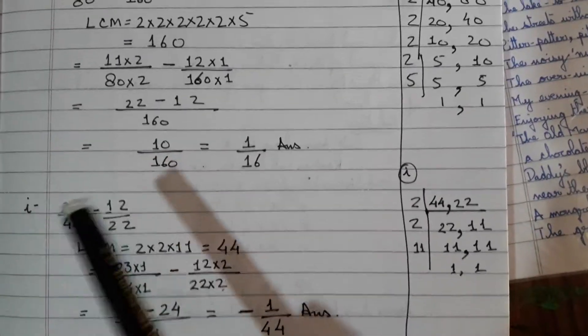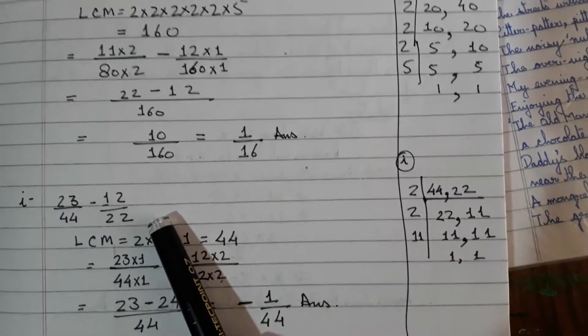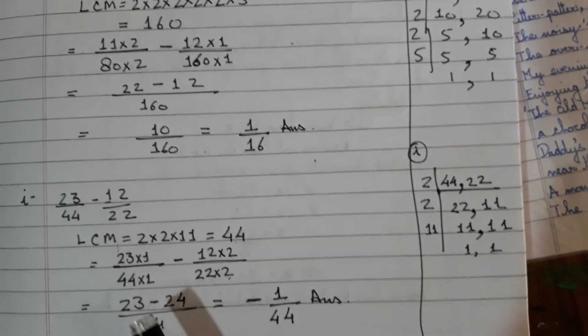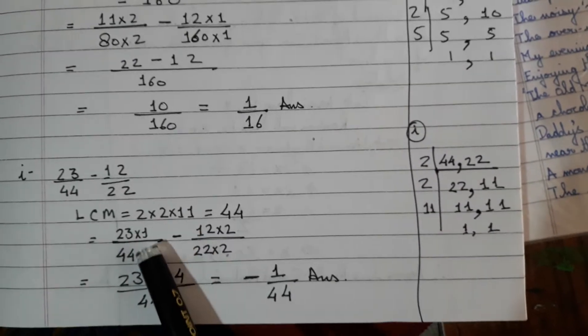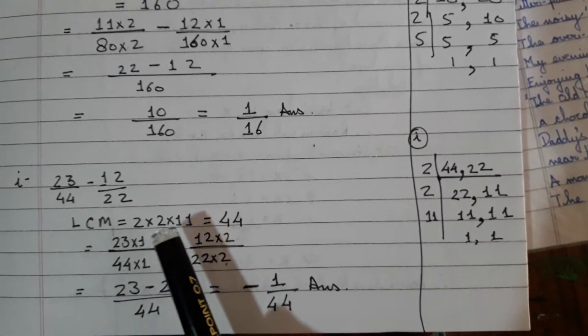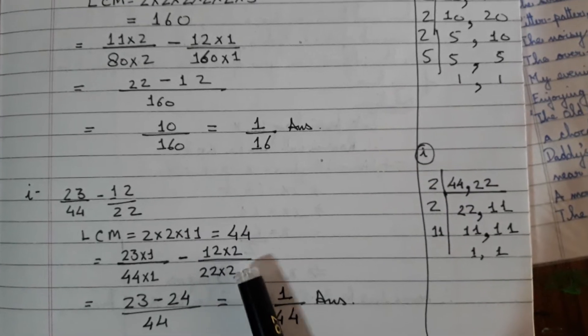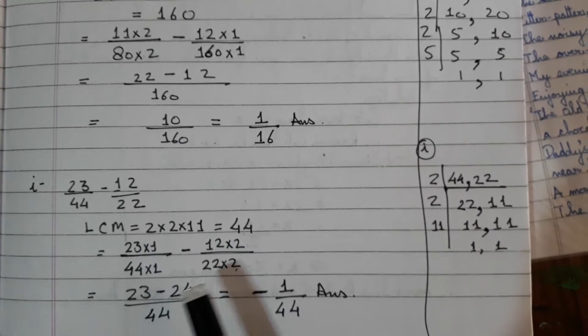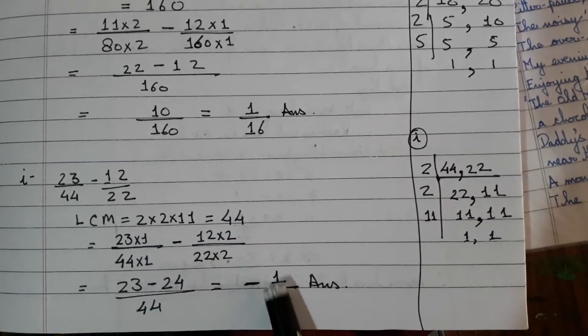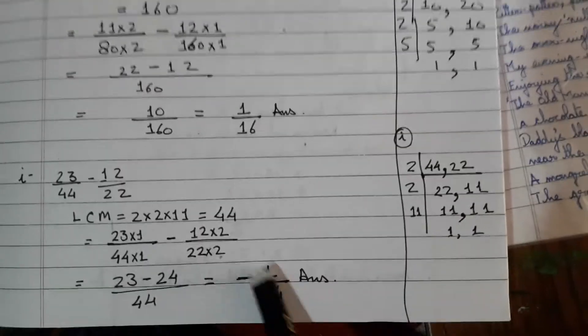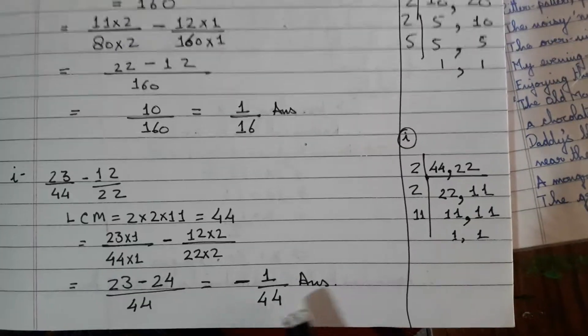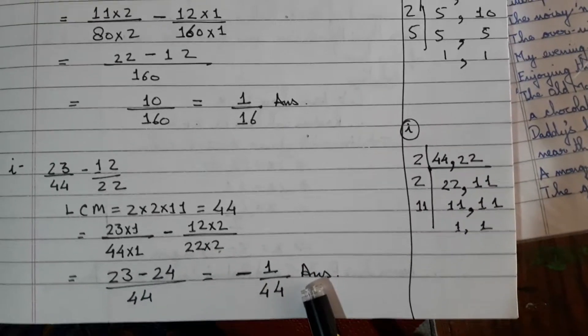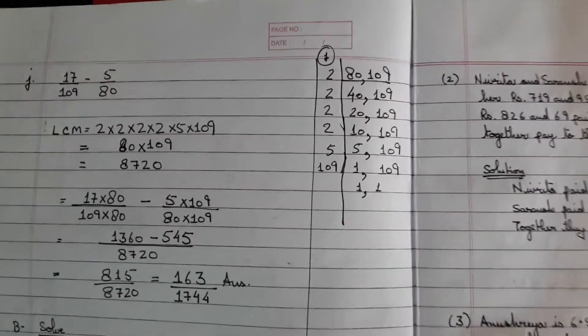Let us look at the next one. 23 over 44 minus 12 over 22. Do the LCM. 44 is your LCM. When you get 44 as your LCM, to make it 44 you multiply it by 1, and to make 22 equal to 44 you multiply it by 2. So 23 minus 12×2 is 24. Again, when you do the calculation, the answer will be in minus because 24 is bigger than 23 and it has a minus sign.